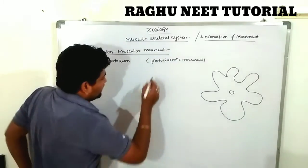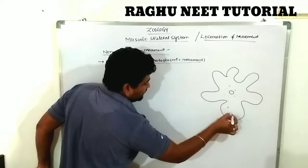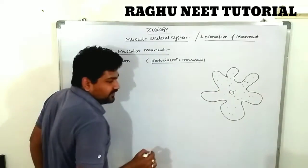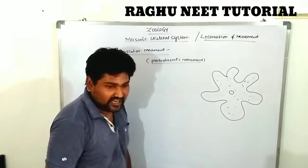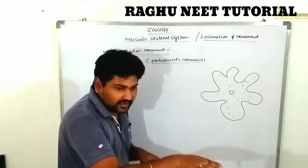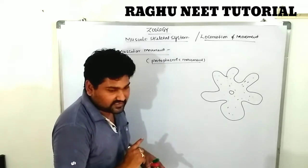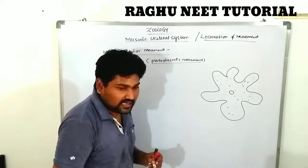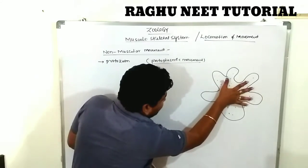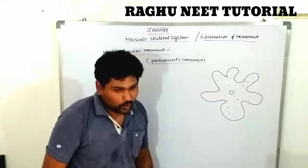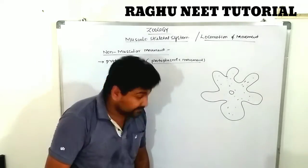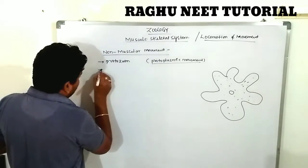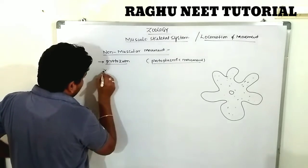The body of the protozoa contains a large amount of cytoplasm. When the amoeba wants to move, high pressure is created through the plasma-gel to plasma-sol mechanism. Projections come out of the cytoplasm forming finger-like projections known as lobopodia. This type of locomotion is called protoplasmic movement. In protozoans, this is commonly known as pseudopodia.